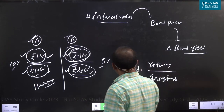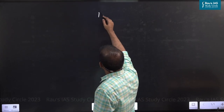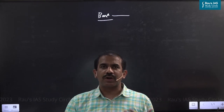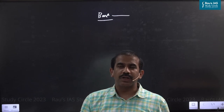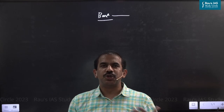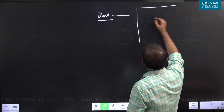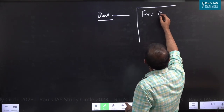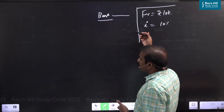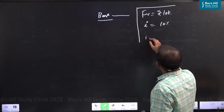Now let's confine our discussion to bond yield and bond prices. A bond is simply a borrowing instrument. When someone borrows money, they give you a written contract saying they owe you money and will pay back a certain amount with a certain rate of interest, and this paper has a maturity period. Every bond is characterized by three parameters: the face value of the bond — let's say 10,000 — the annual rate of interest, which is 10%, and the maturity period of 10 years.